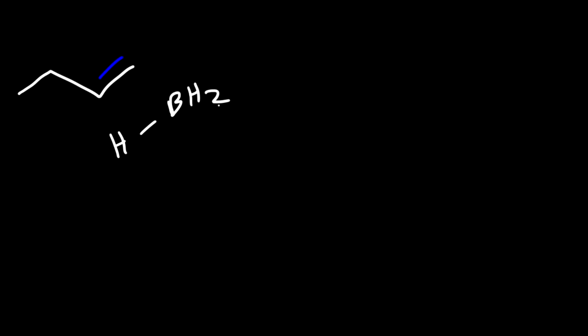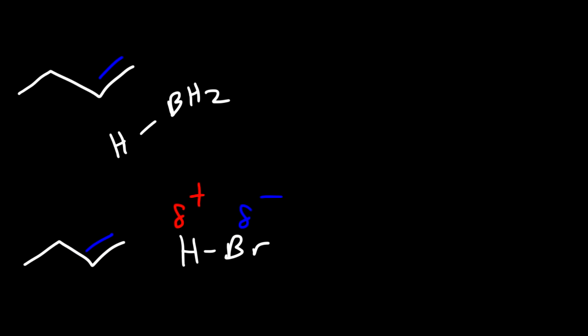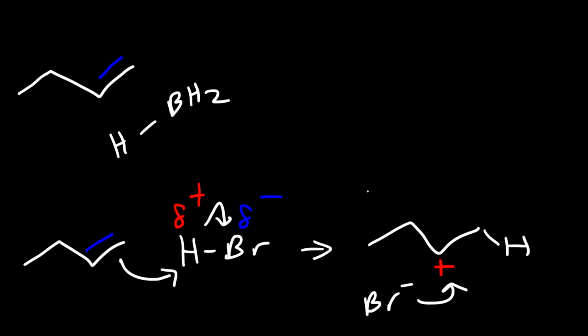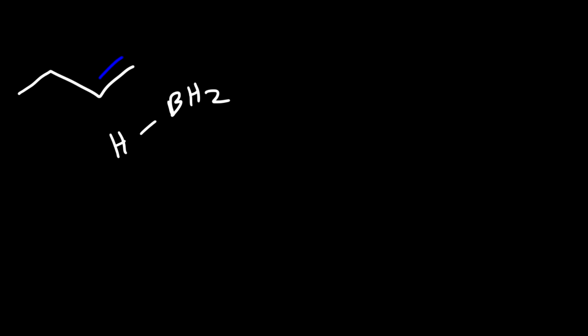Now let's talk about the mechanism for this reaction. 1-butene is going to react with borane. I want to compare this reaction to the reaction of an alkene with HBr. The hydrogen atom has a partial positive charge and the bromine atom has a partial negative charge, because bromine is more electronegative than hydrogen. The nucleophilic double bond attacks the electrophilic hydrogen, expelling the bromine atom, giving us a carbocation, and then bromide attacks the carbocation. We get 2-bromobutane.